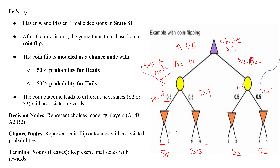The rewards shown are 4, 6, 9, 6, 8, 2, 7. There are three types of nodes in this game tree. First are Decision Nodes, which represent choices made by players — for example A1, B1, A2, B2. Second are Chance Nodes, which represent coin flip outcomes with associated probabilities, predicting the next state. Third are Terminal Nodes — the leaves — which represent the final states with reward or utility values. That is how you write an example for Stochastic Games where randomness is involved.